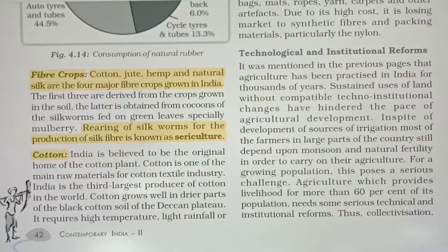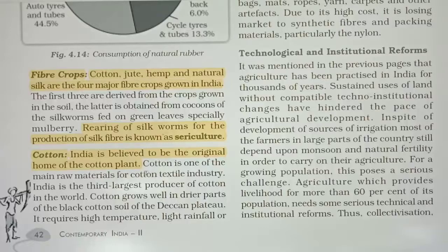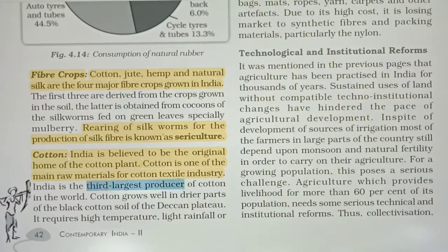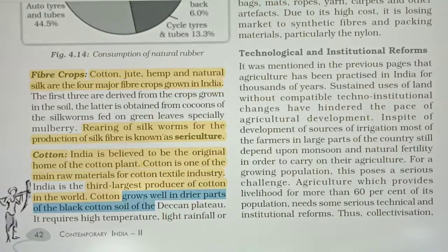Next is cotton. India is believed to be the original home of the cotton plant. We discussed this in the third chapter of history — that Indian cotton was in huge demand in the world. Cotton is one of the main raw materials for the cotton textile industry, and India is the third largest producer of cotton in the world. Cotton grows well in the drier parts of the black soil of the Deccan Plateau — black soil is the best soil for cotton.